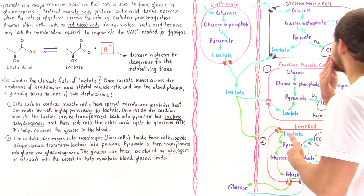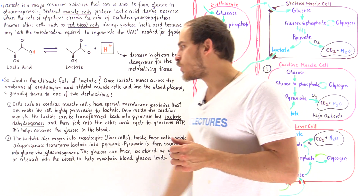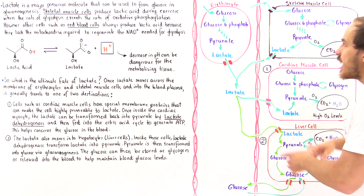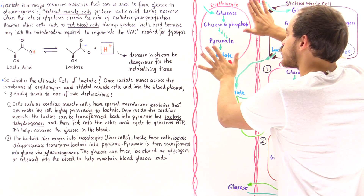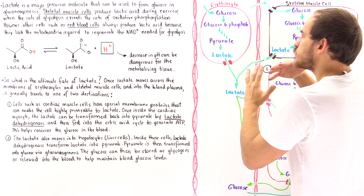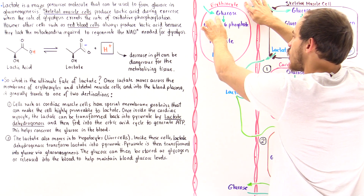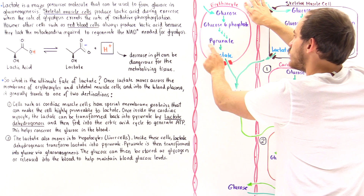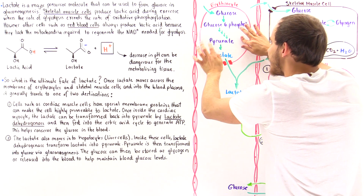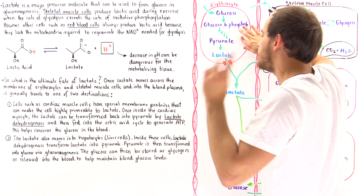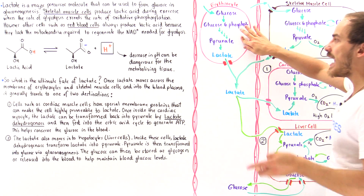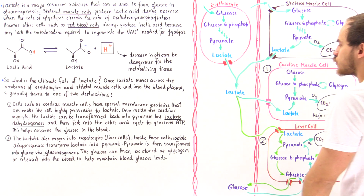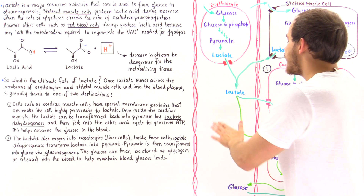At the same time we're running, red blood cells are also carrying out many processes. They uptake glucose molecules from the bloodstream to form ATP. Glycolysis takes place in the erythrocyte, and once pyruvate is formed, because red blood cells have no mitochondria, they can't use aerobic respiration. So they depend strictly on fermentation — transforming pyruvate into lactate — which then diffuses into the bloodstream. Now we have a buildup of lactate in our bloodstream.